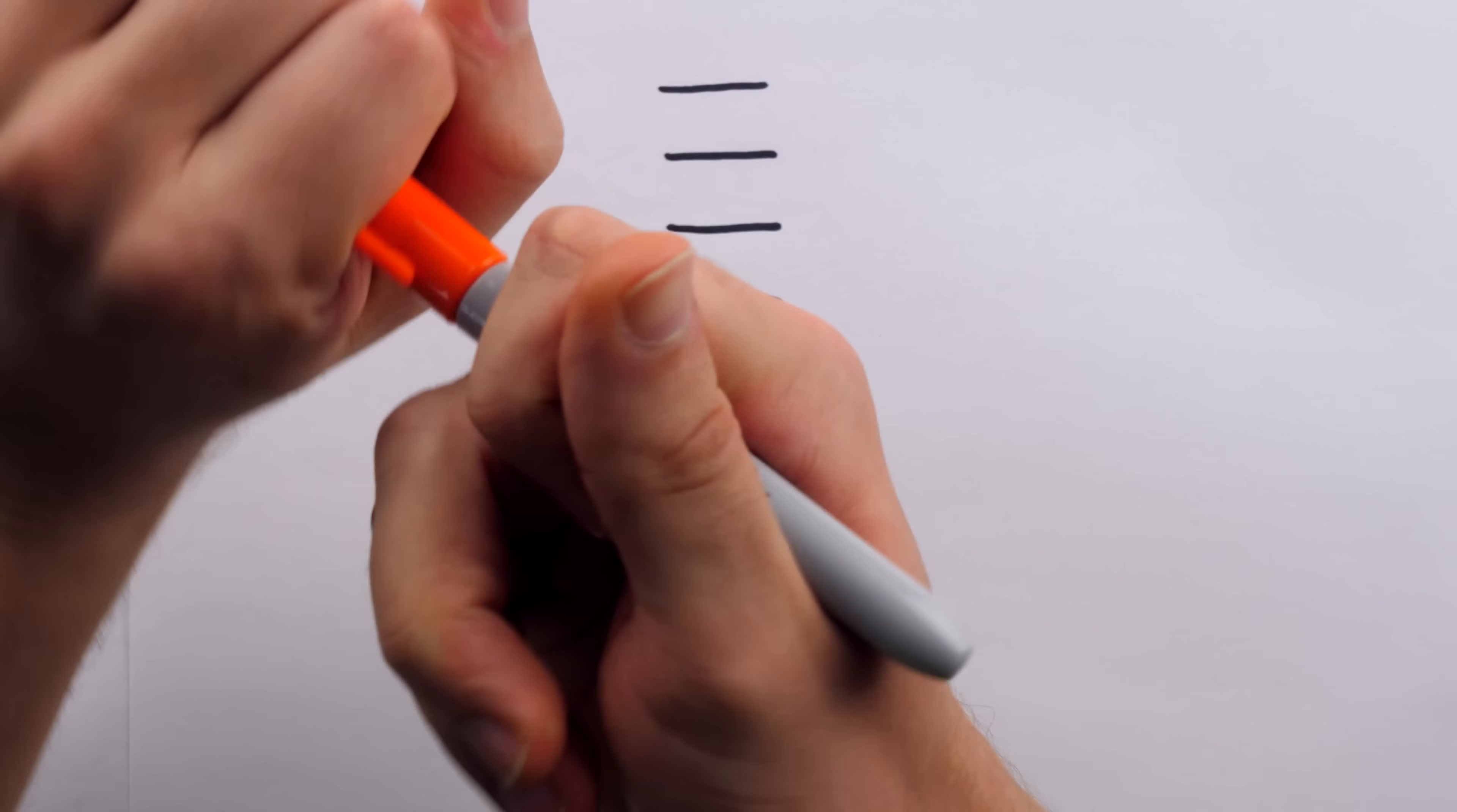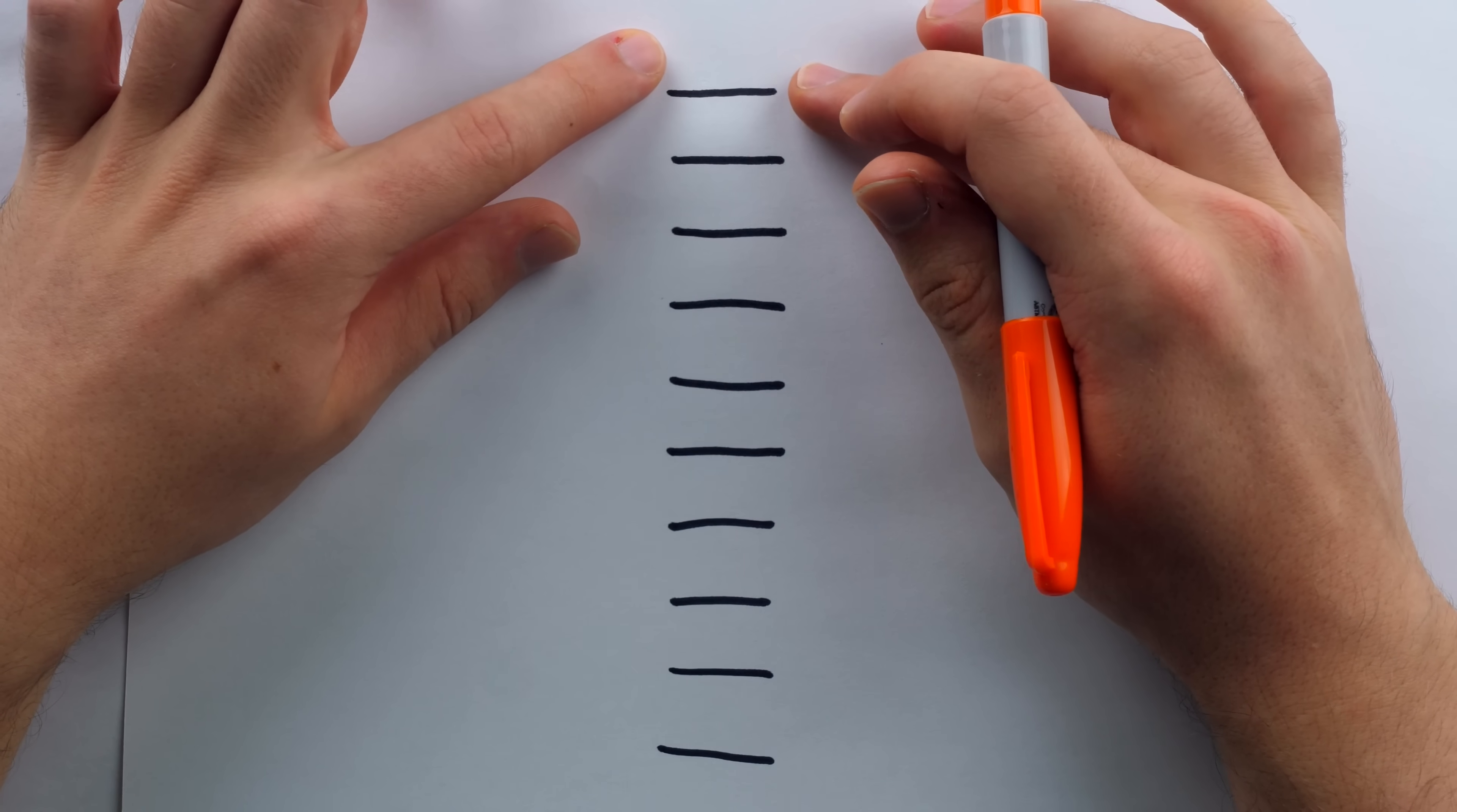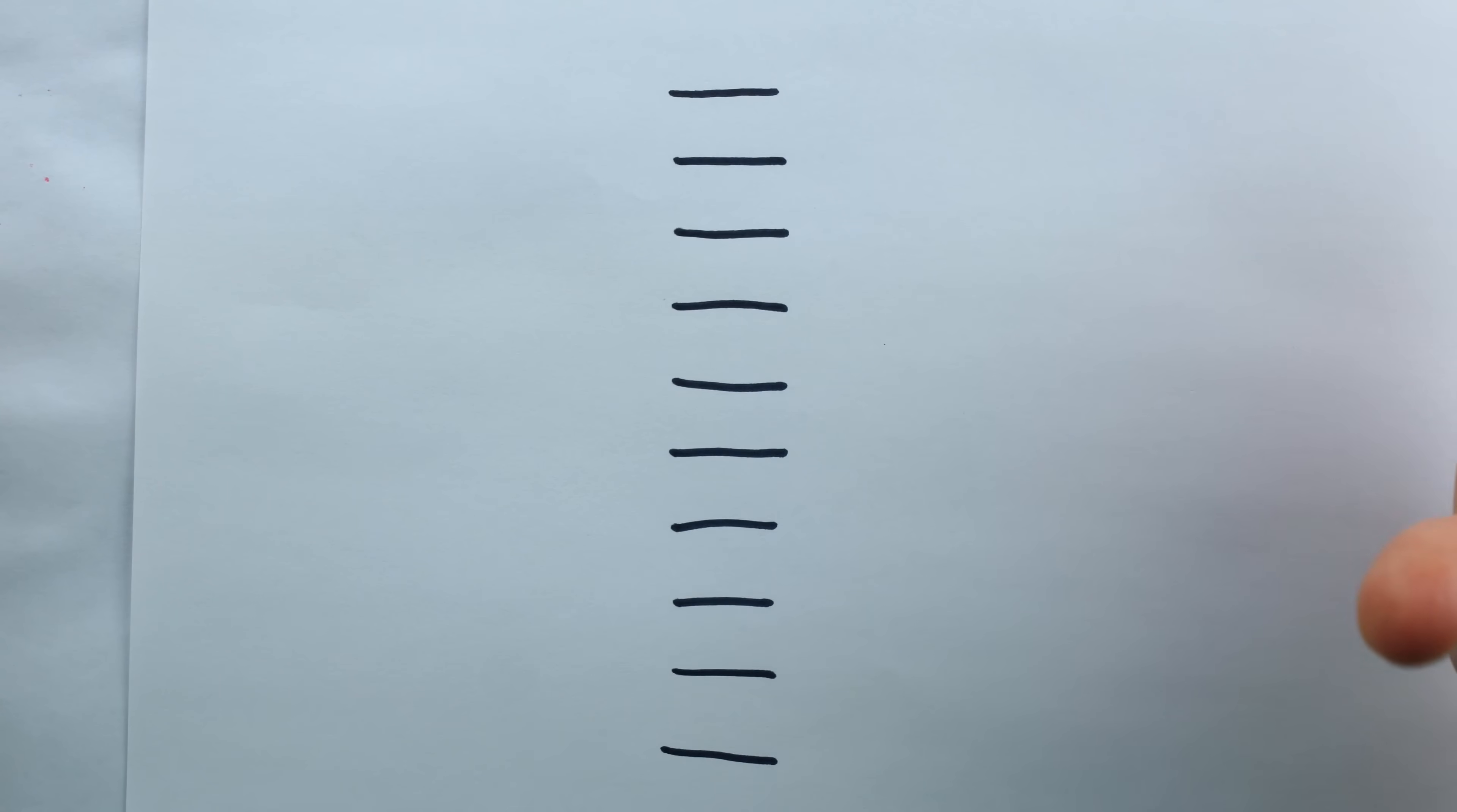You want to have an audience member come up, and what you're going to instruct them to do is write a number in the first blank and a number in the second blank. Doesn't have to be anything special, any number you want. You, as the performer, might want to set some restrictions on these numbers. If you want to make the trick easier for yourself, you could say a number between 1 and 20 in the first two blanks, and just leave it at that. Or you could say any two-digit number, if you want to push it a little further.